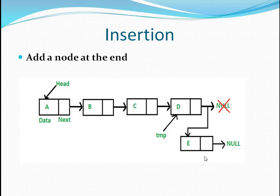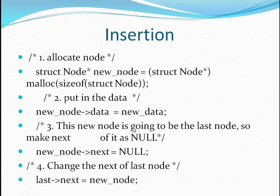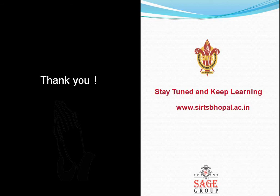For inserting a node at the end, I again change two pointers. E will be the new node created, its next field becomes null since it is the last node, and D — which was previously the last node — will now have the address of E in its next field. In the code, I create the new node, assign memory with malloc, assign the data, set 'new_node->next = null', and set 'last->next = new_node'. This is how you can insert nodes at the beginning, at a given location, and at the end of a linked list.